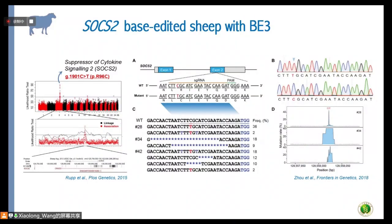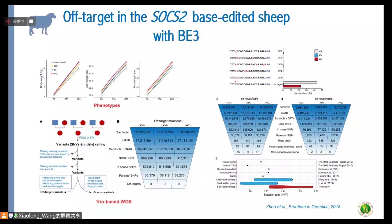The next gene is suppressor of cytokine signaling 2 (SOCS2), previously reported to be associated with increased body size. We converted a C-to-T mutation using base editor 3. We observed increased body weight and other body parameters in our three edited animals compared with controls. Using a trio-based whole-genome sequencing strategy, we identified candidate off-target mutations in the edited animals, but after excluding mutations also present in the parents, we confirmed zero off-target mutations in all three animals.